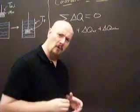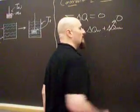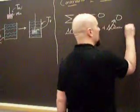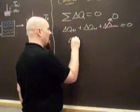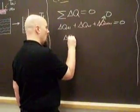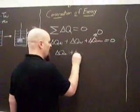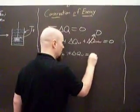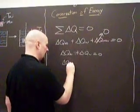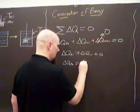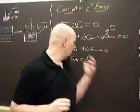We'll talk more about that later, but for our equation, we're considering that zero. So, that equals zero. We have the change in heat of the aluminum plus the change in heat of the water equals zero. Then we take one and move it to the other side, so delta-Q aluminum equals the delta-Q water, with a minus sign on one side or the other.